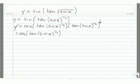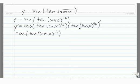Now we need to differentiate this piece. We need to use the chain rule again, where this time the outside function is tangent of x, and the inside function is sine of x to the 1 half. The derivative of the outside is the derivative of tangent, which is secant squared. And we need to evaluate that at this inside function, which is sine of x to the 1 half.